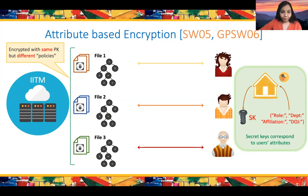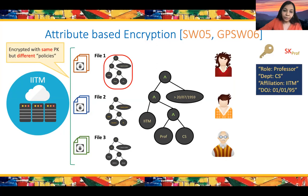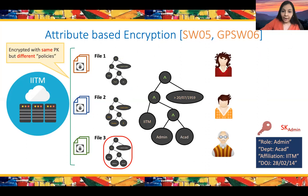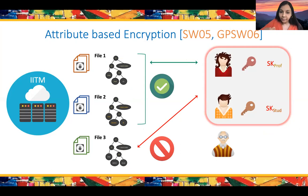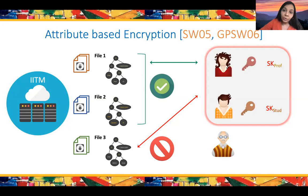For instance, a file might have an access control policy saying only a professor in the computer science department at IIT Madras with a date of joining satisfying some constraint can decrypt it. Every file will have similar restrictions. A file should be decryptable if and only if a user's secret key has attributes satisfying the embedded policy. For security, even if users collude and pool their keys, they cannot decrypt any file they were not individually authorized to decrypt. This property is known as collusion resistance, a very important security property for ABE schemes.